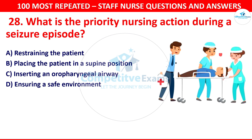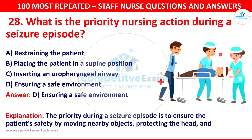The correct answer is ensuring a safe environment. The priority during a seizure episode is to ensure the patient's safety by moving nearby objects, protecting the head, and preventing injury.